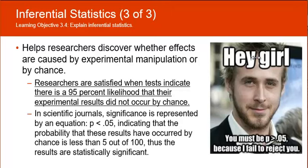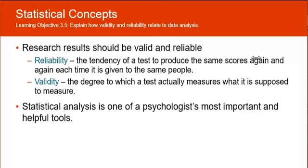Research results should be valid and reliable. Reliability is the tendency of a test to produce the same scores again and again if it's given to the same people. And validity is whether the test actually measures what it is supposed to measure. The example I always use is a scale. A scale is a test of your weight. The reliability of the scale is if you step on the scale three times, you're going to get the same weight. And validity is whether that is actually your weight or not. So if Mr. Snyder steps on a scale and it says 175 three times, then that is a reliable test. But is it a valid test? No, I'm actually more like 200. So it's not going to tell my actual weight, but it is a reliable test because it gave me the same weight three times. Statistical analysis is one of a psychologist's most important and helpful tools.